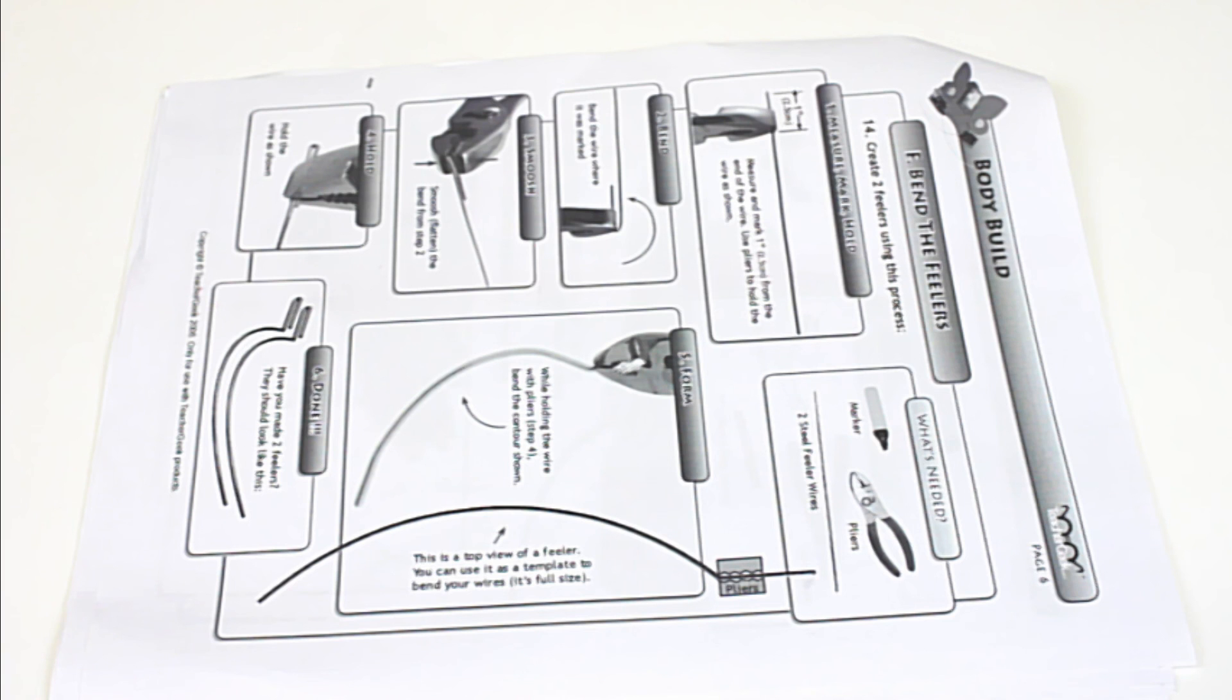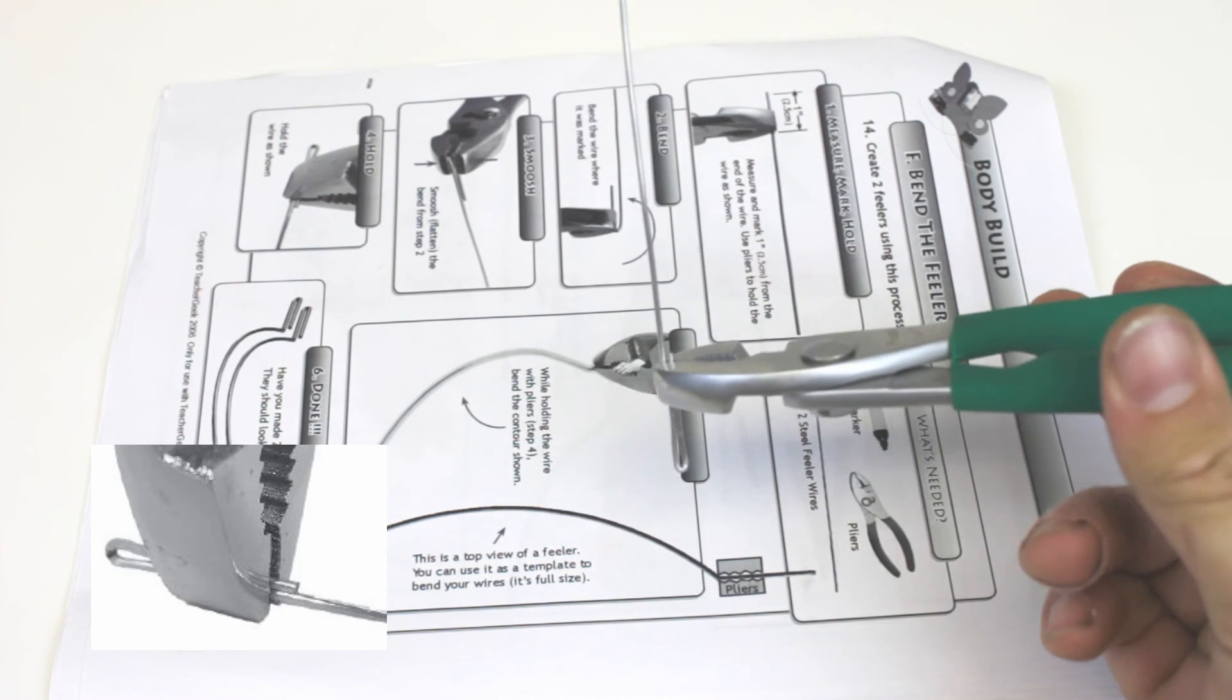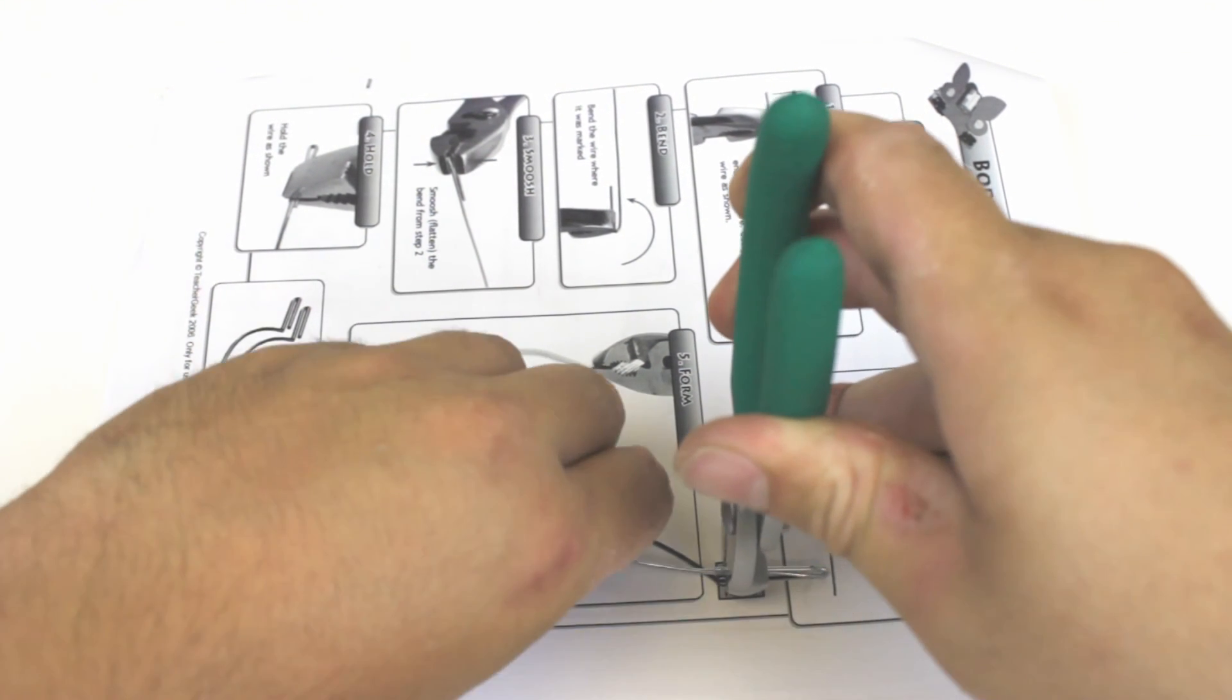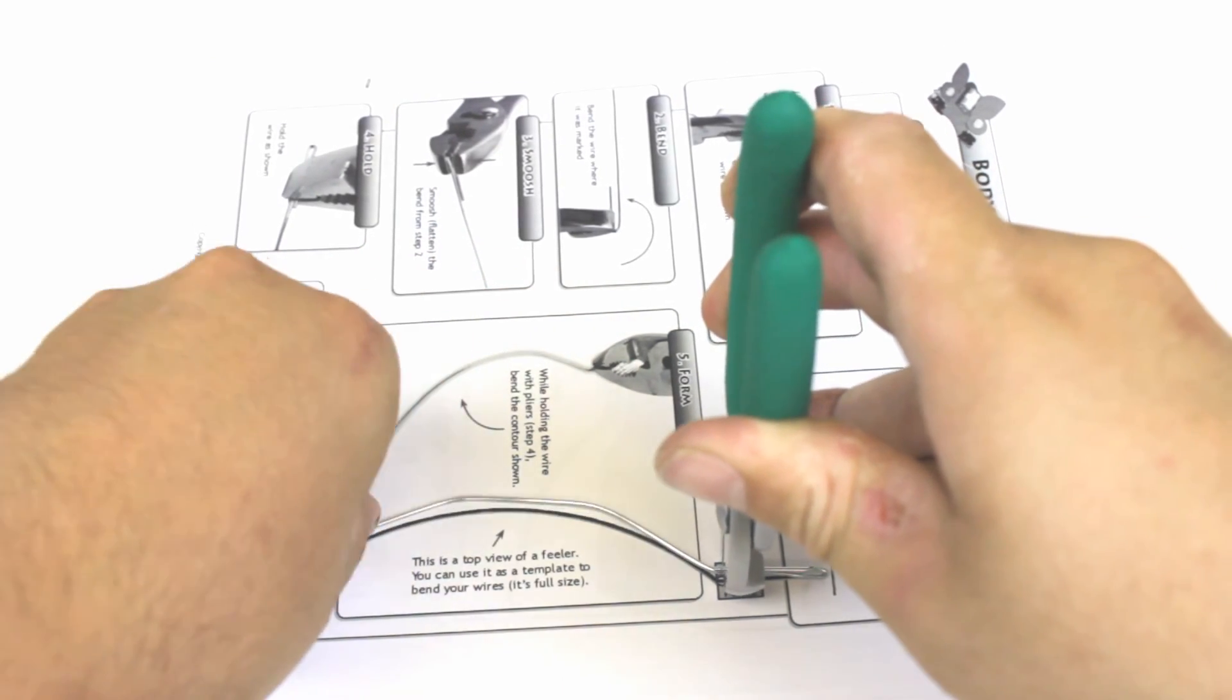On page 6 of your instructions you can use the template to bend your feeler wire. Grab the feeler wire as shown in the picture. Place the pliers onto the template and bend the feeler wire to the contour of your template.